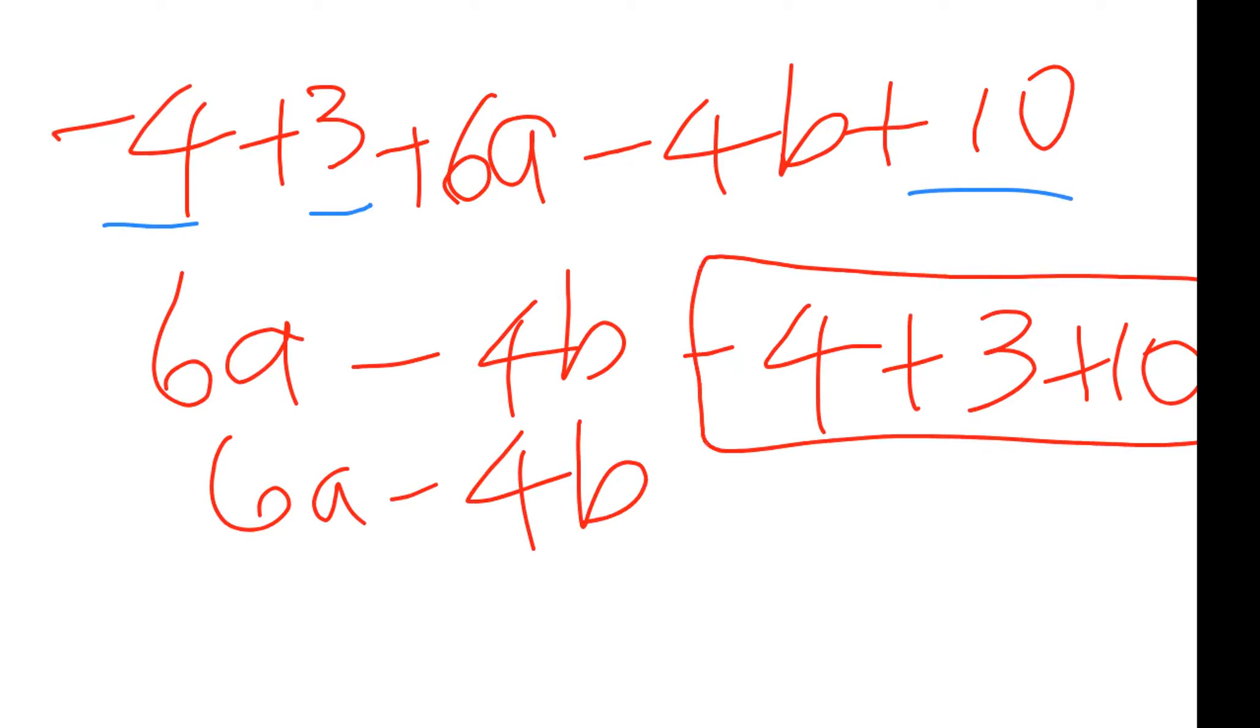Again, 6a minus 4b, you're not touching it. I don't know how you want to do this, if you want to put the positives together and say that is negative 4 plus 13, or if you wanted to say negative 4 and 3 come together, negative 1 plus 10. Both would give you the same answer of positive 9. So 6a minus 4b plus 9.